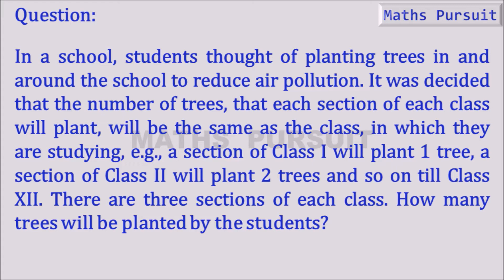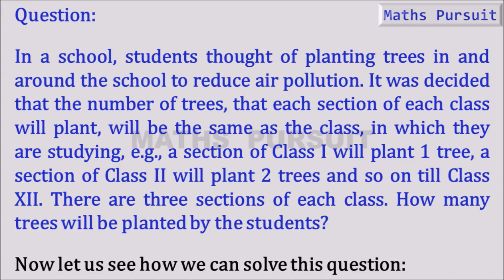It was decided that the number of trees that each section of each class will plant will be the same as the class in which they are studying. For example, a section of Class 1 will plant one tree, a section of Class 2 will plant two trees, and so on till Class 12. There are three sections of each class. How many trees will be planted by the students?